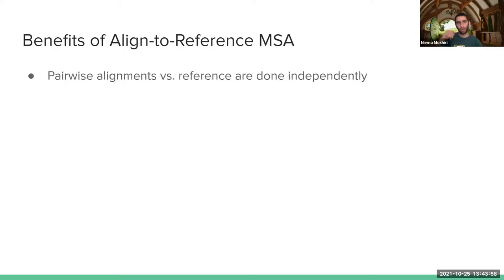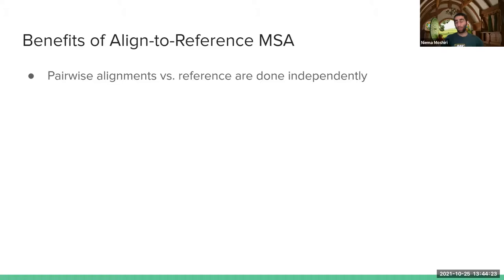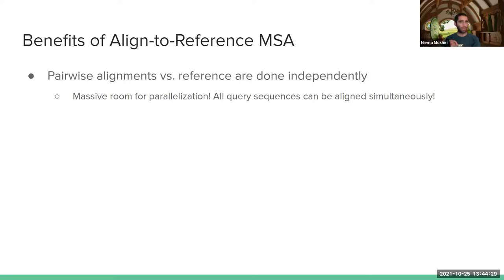What are the benefits of this align-to-reference approach? The main benefit is that pairwise alignments against the reference are done independently. In multiple sequence alignment you have to fill the entire high-dimensional matrix keeping all sequences in mind simultaneously. Here, I can align each sequence to the reference independently. This means there's a ton of room for parallelization — theoretically all pairwise alignments can be done at the same time. With a 16-core computer I can do 16 at once; with a supercomputer and 1,000 cores, I can do 1,000 at a time.